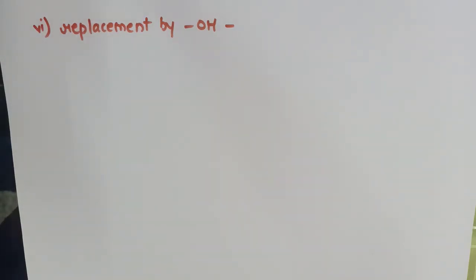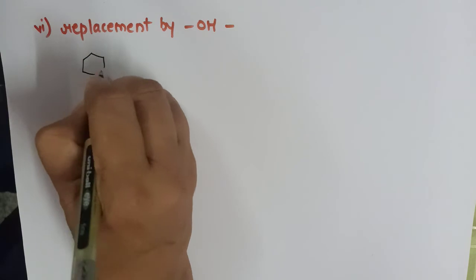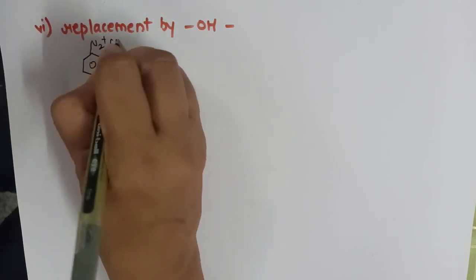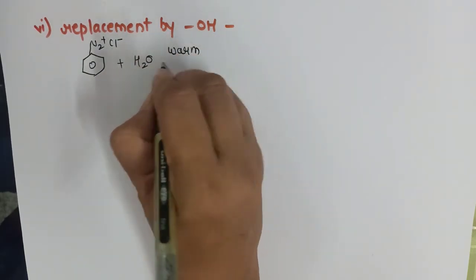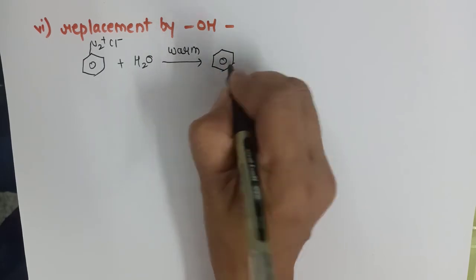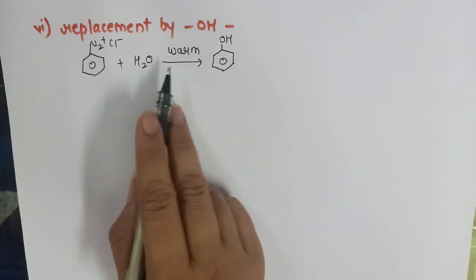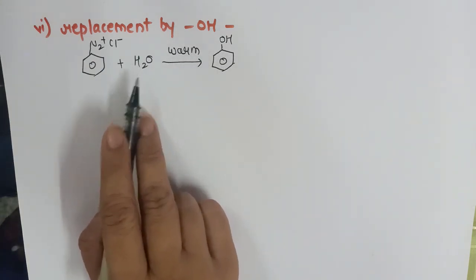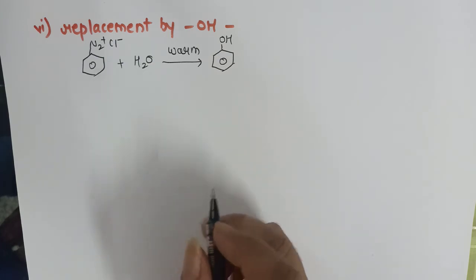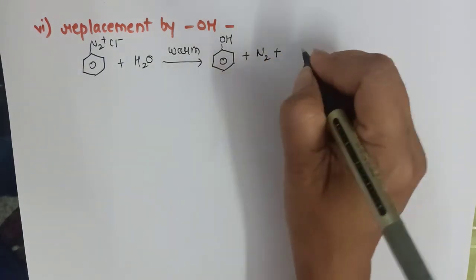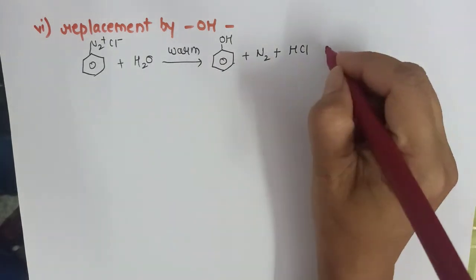To get phenol from BDC, there is a different method. The diazonium group is replaced by OH: when diazonium salt BDC is warmed with water, it gives phenol along with evolution of nitrogen. So remember — BDC with ethanol gives benzene; BDC with warm water gives phenol. BDC reacts with warm water, and this was also mentioned in the physical properties.